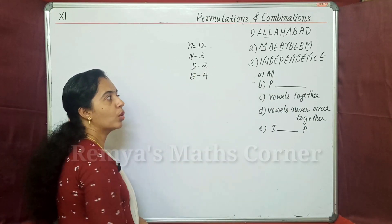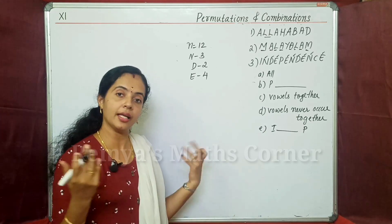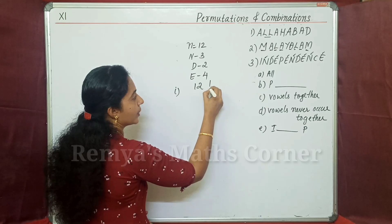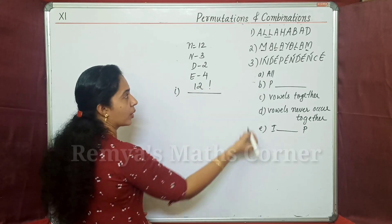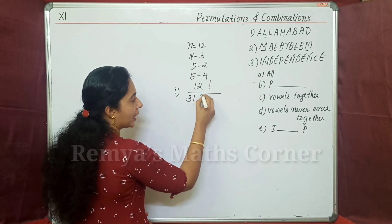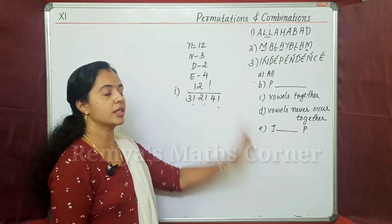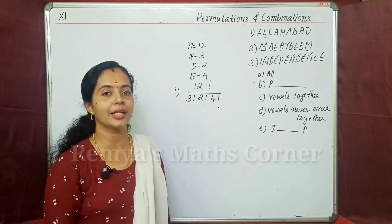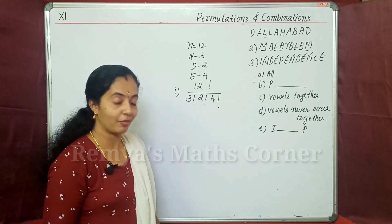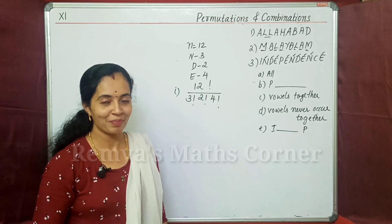So, how many permutations are possible? Total 12. That means n equals 3 repeat, D equals 2, and E equals 4. What do we do? On the total number of arrangements, we get 12 factorial divided by 3 factorial into 2 factorial into 4 factorial.